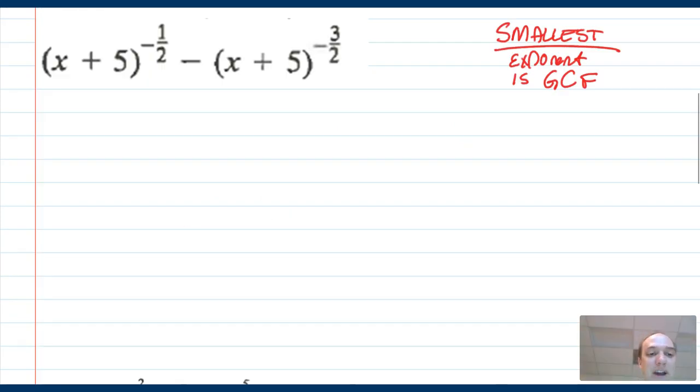Here's a problem. This is different than prior problems because we have negative one half and negative three halves. It's similar to prior problems because we have x plus 5, x plus 5, and we have fractions.